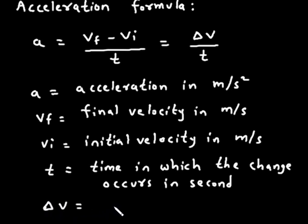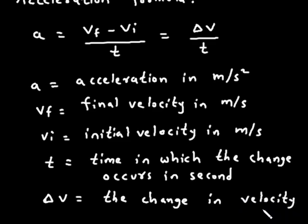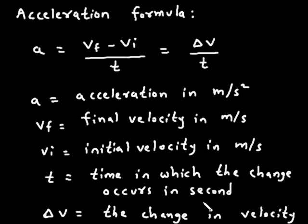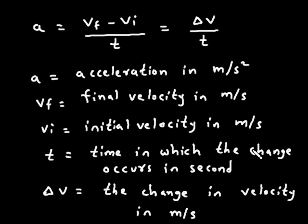Del V is equal to the change in velocity in meter per second. Acceleration formula: A is equal to VF minus VI upon T, is equal to Del V upon T. A is Acceleration in meter per second square, VF is Final Velocity in meter per second, VI is Initial Velocity in meter per second, T is Time in which the change occurs in seconds, and Del V is the change in velocity in meter per second.